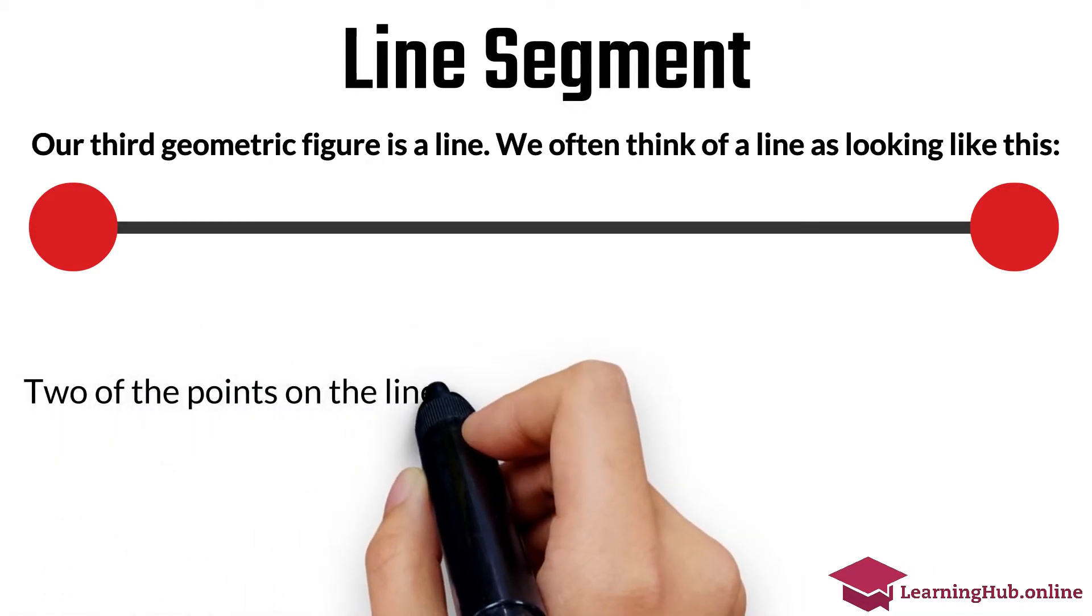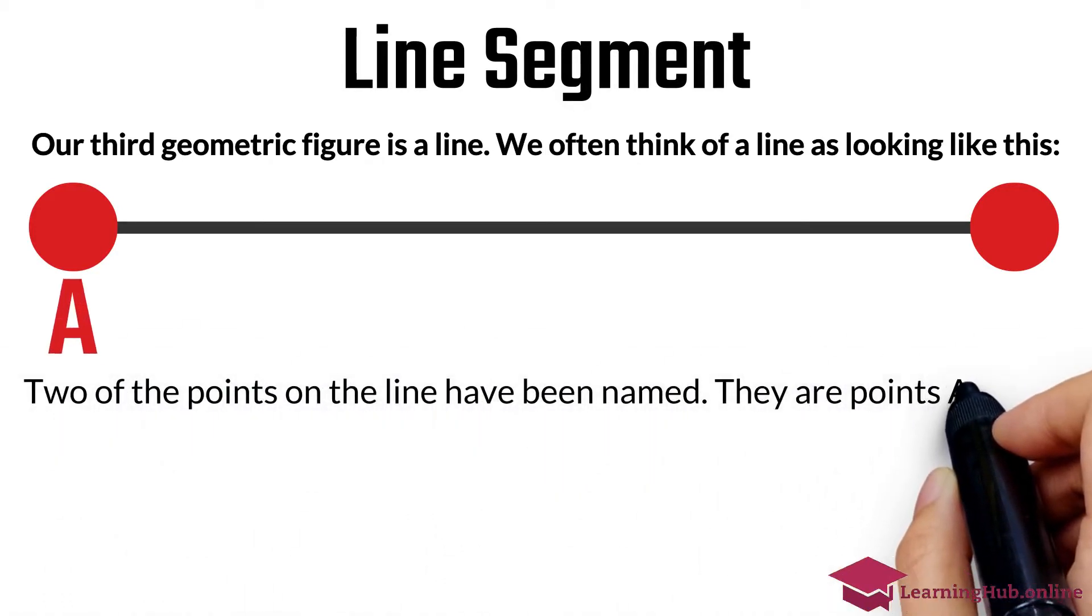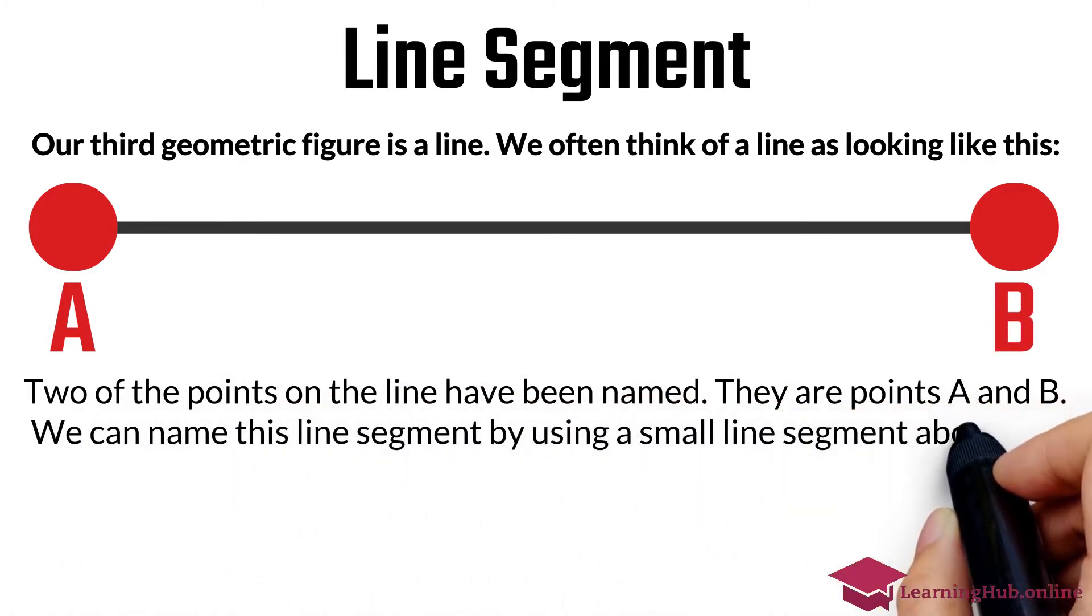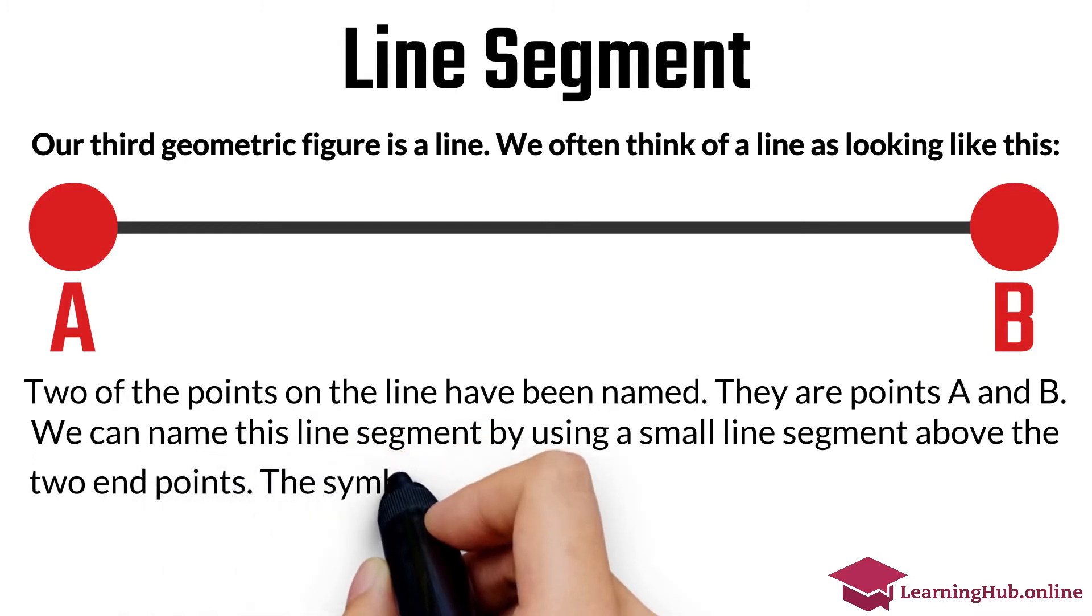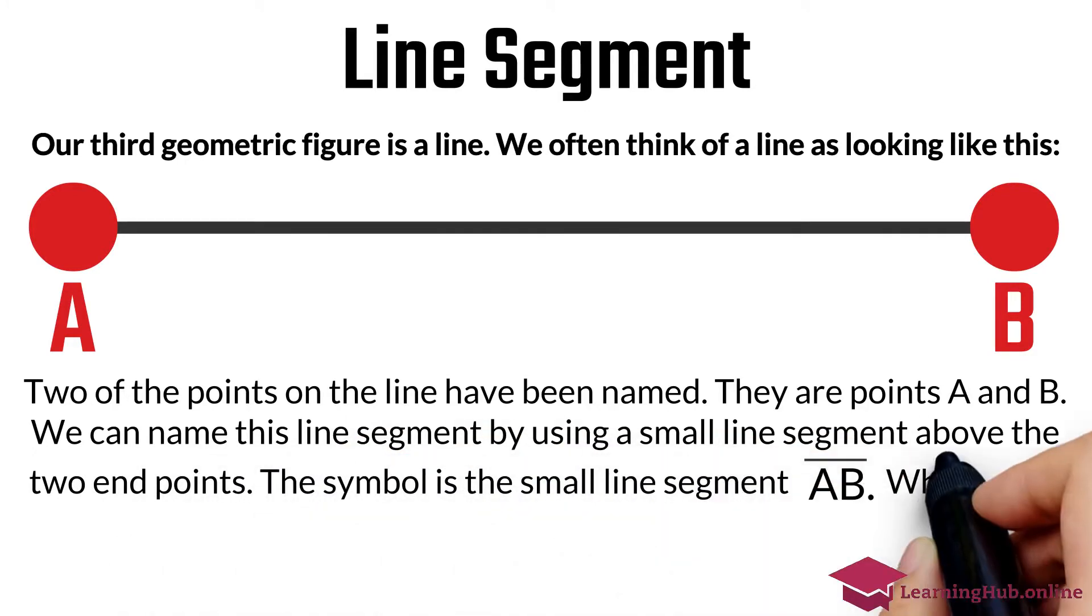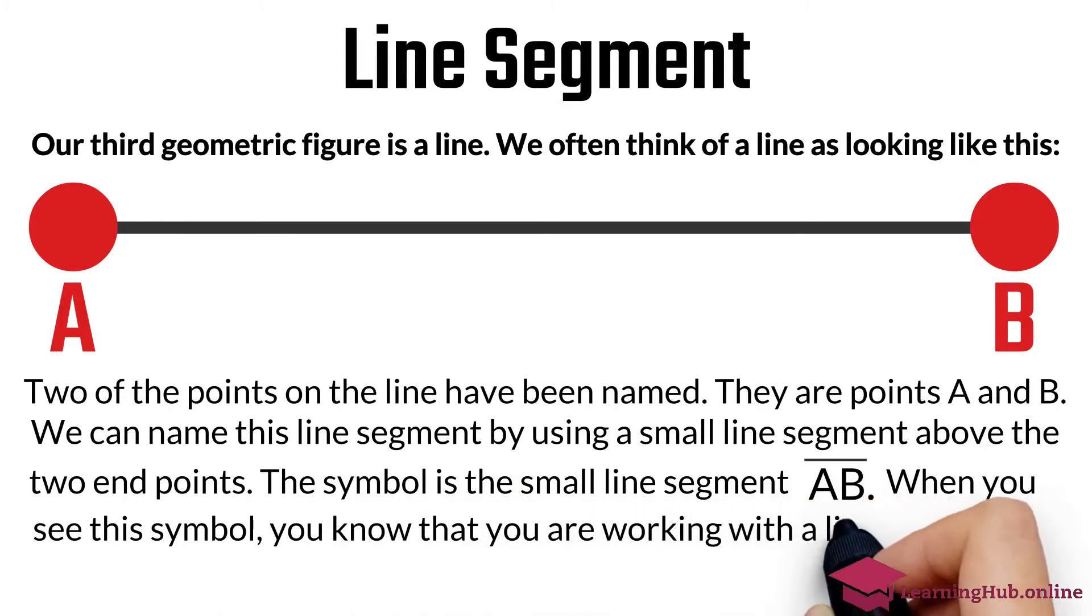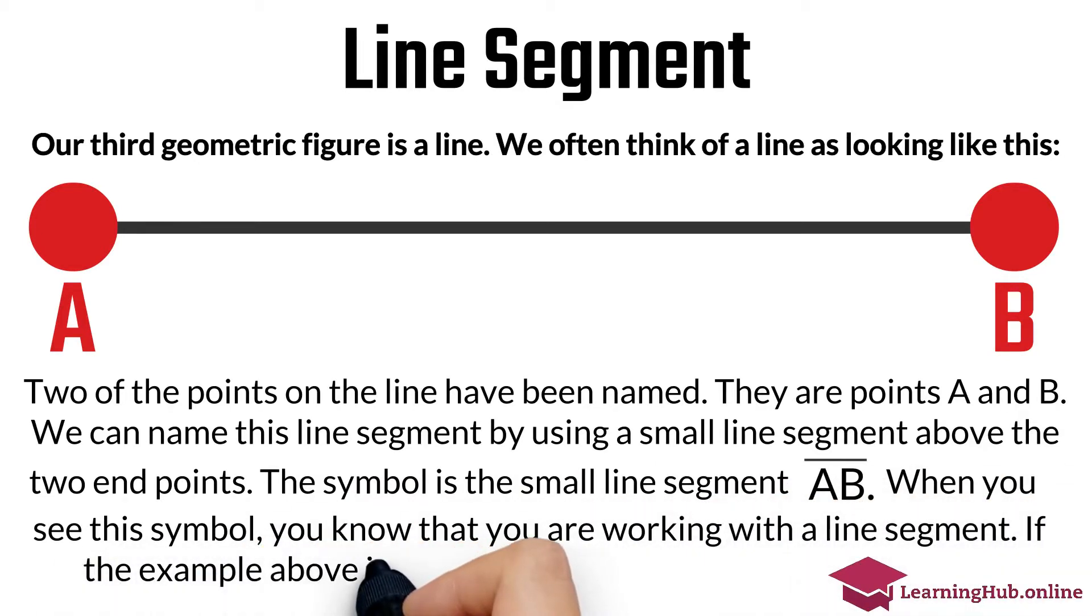Two of the points on the line have been named. They are points A and B. We can name this line segment by using a small line segment above the two endpoints. The symbol is the small line segment. When you see this symbol, you know that you are working with a line segment. If the example above is a line segment, what does a line look like?